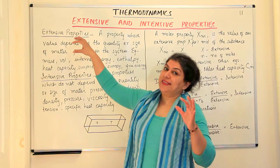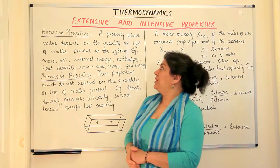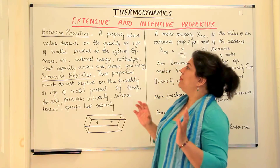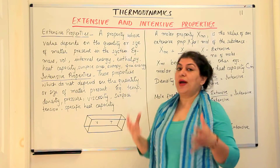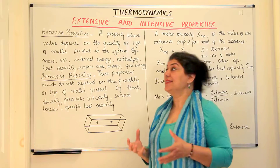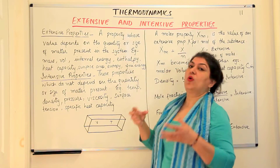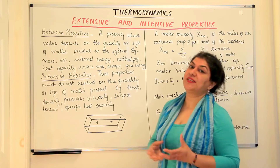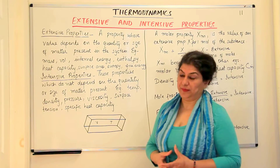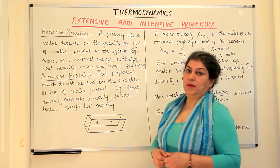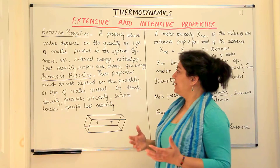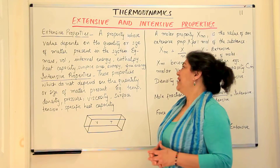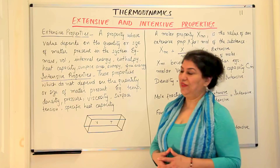Let us start with the extensive properties first. An extensive property may be defined as a property whose value depends on the quantity, amount, or size of matter which is present in the system. For example: mass, volume, internal energy, enthalpy, heat capacity, surface area, entropy, and free energy.